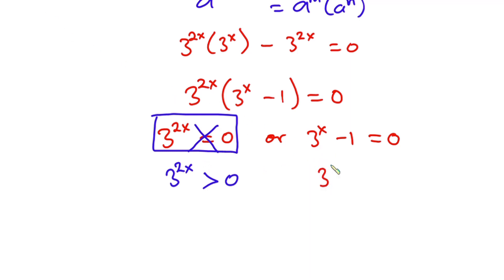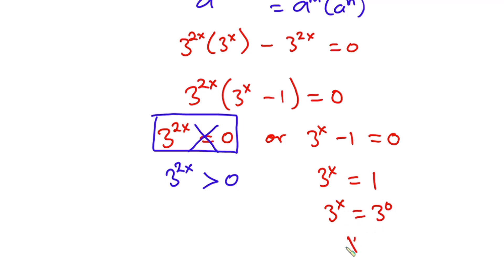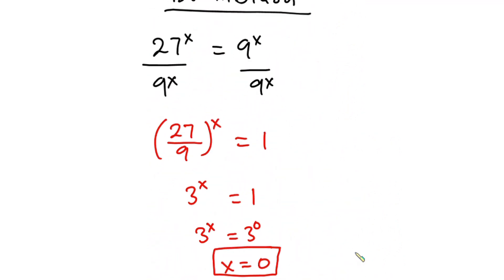Now let's pay attention to the second equation. Making 3 to the power x the subject, we have 3 to the power x is equal to 1, which is the same as 3 to the power x equals 3 to the power 0. Since the bases are the same, x is equal to 0.